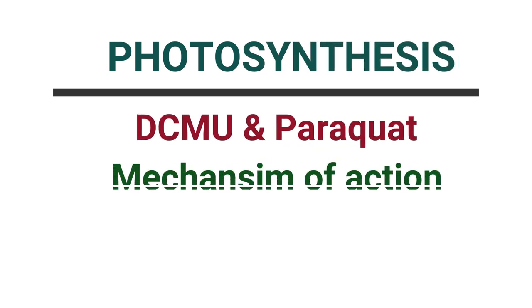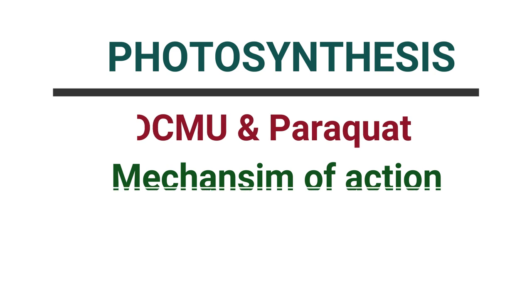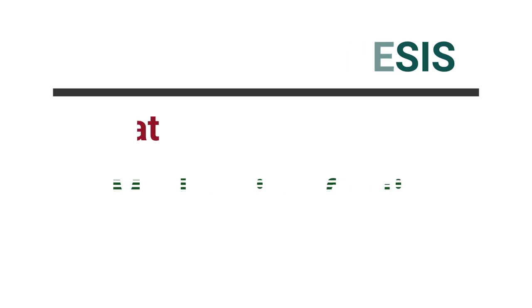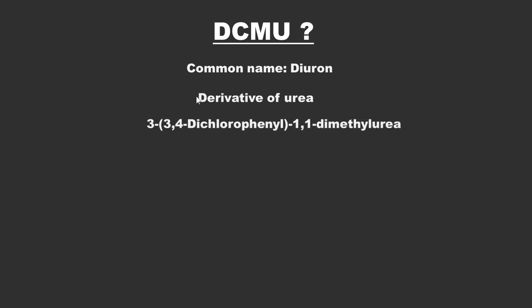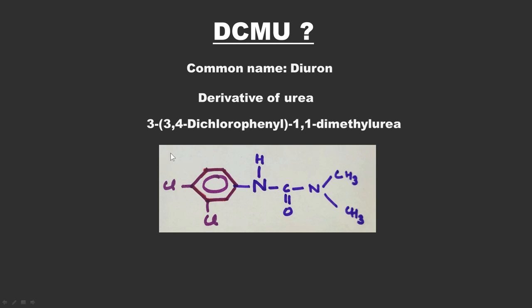Today we will discuss DCMU and paraquat, two important herbicides that affect photosynthesis. DCMU's common name is diuron. It is a derivative of urea, and its chemical name is 3-(3,4-dichlorophenyl)-1,1-dimethyl urea. This is its chemical structure, where you can see why it is called a derivative of urea — this moiety shows the urea group.